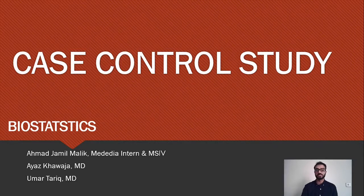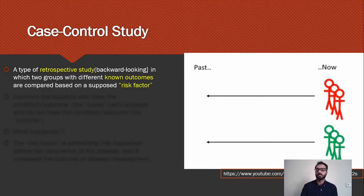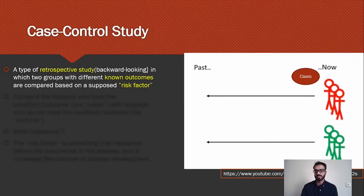The case control study. A case control study is basically a retrospective study, which means we are looking backwards in time. In this study, we have two groups with different but known outcomes, and we are going to compare the two groups based on a supposed risk factor — the two groups being the cases and the controls.